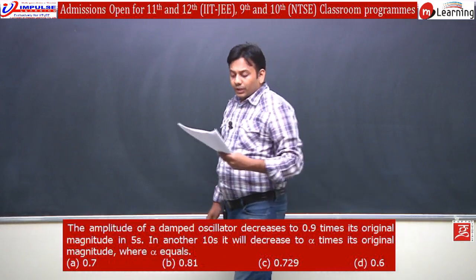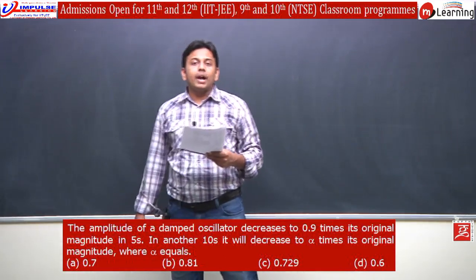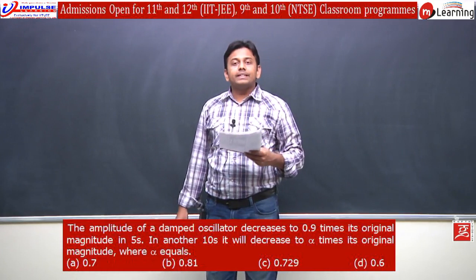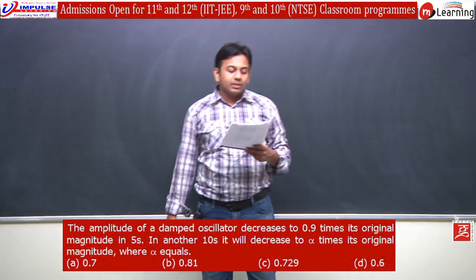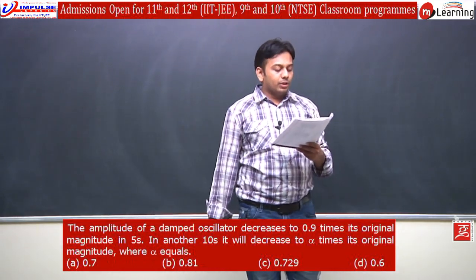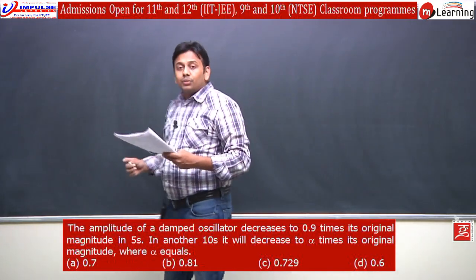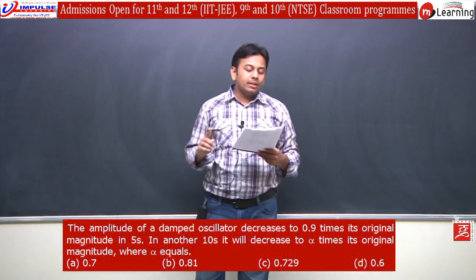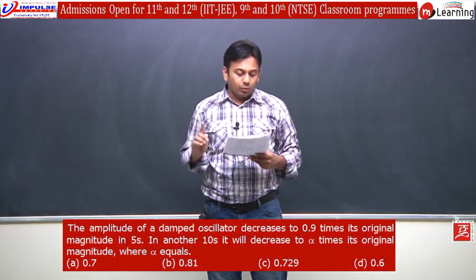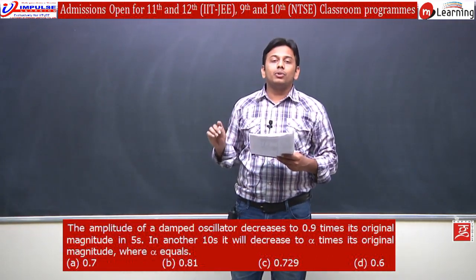The question is, the amplitude of a damped oscillator decreases to 0.9 times its original magnitude in 5 seconds. In another 10 seconds, it will decrease to alpha times its original magnitude, where alpha equals dash.